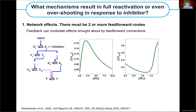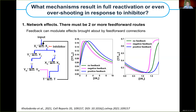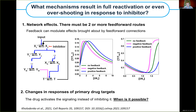The first is network effects: if there are two or more activating routes, one inhibited and another activated by the drug, we can have paradoxical drug responses where the signaling actually increases upon drug treatment. The second case is if the primary drug targets are activated by the inhibitor — meaning the inhibitor doesn't really hit its target. This sounds surprising since inhibitors are supposed to hit their targets.